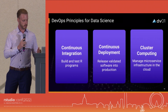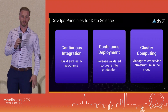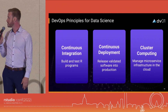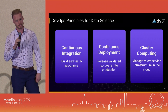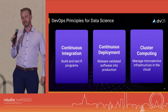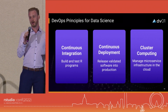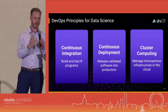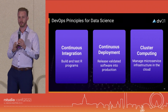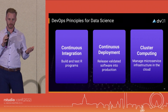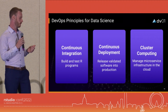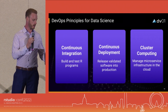In pursuit of building robust R deployments, I want to introduce three DevOps principles. The first is continuous integration, where we build and test our packages. The second is continuous deployment, where we take our tested packages and release them into production systems. The third is cluster computing, which is a common destination for applications in production in the cloud.